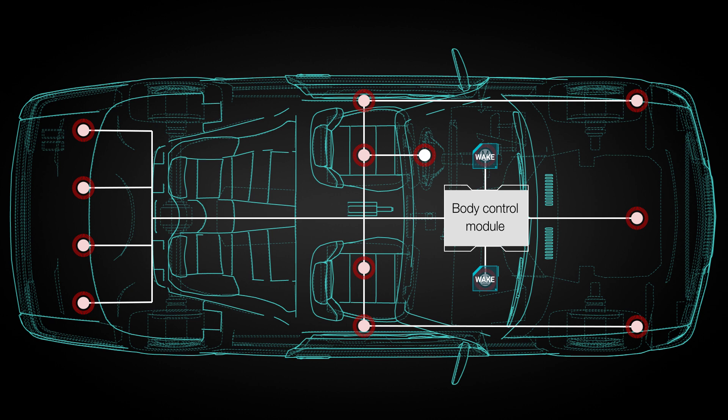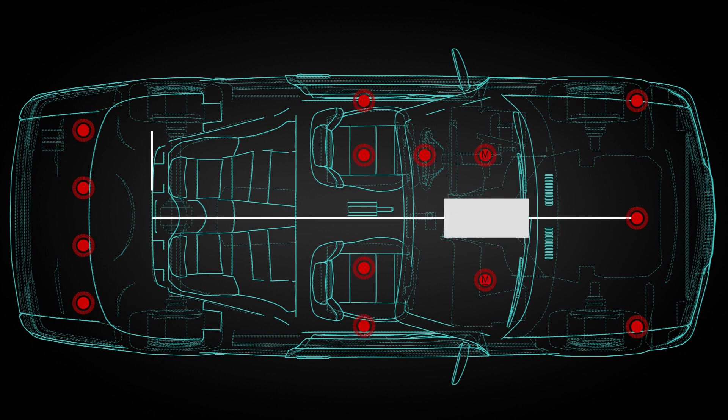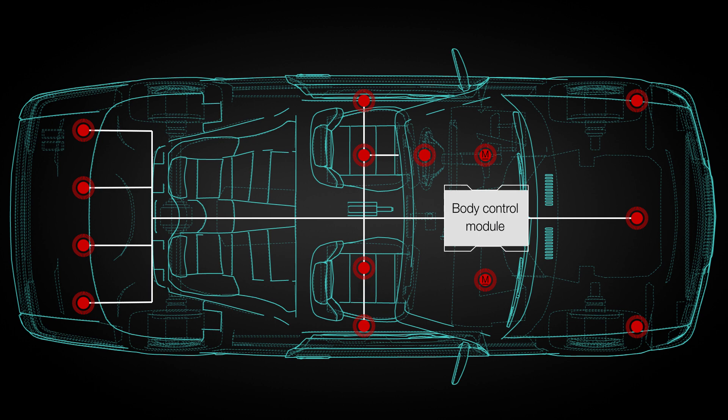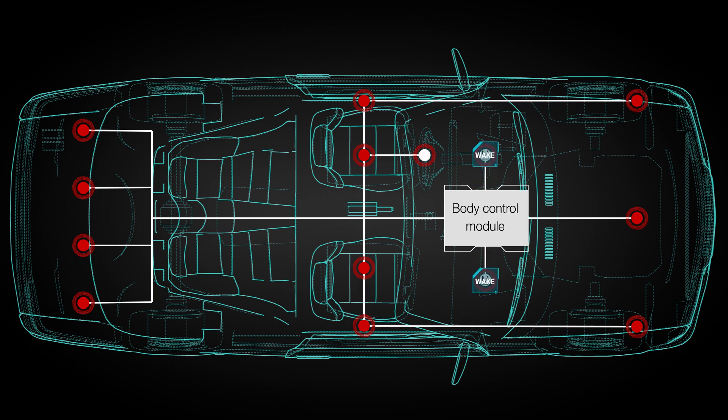In classical CAN or CAN-FD networks, this wake event causes every node on the bus to wake up, turning on all nodes to support just one action. This causes vehicle power consumption to go up when it really isn't necessary. CAN-FD transceivers supporting partial networking can eliminate this inefficiency by only waking targeted nodes rather than all nodes.